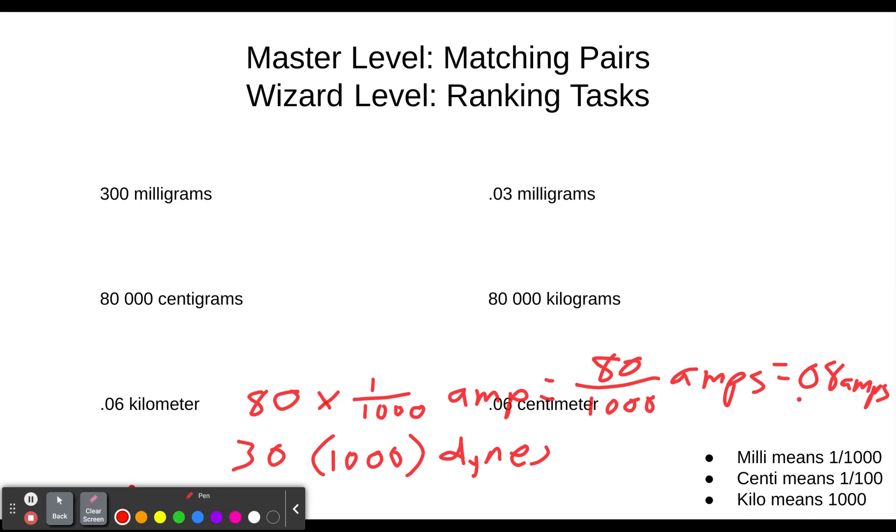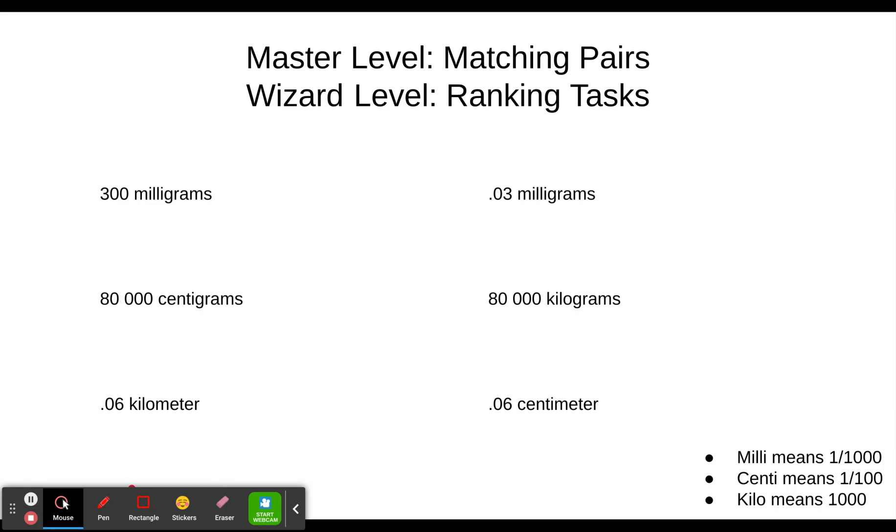Onto the next level. So this one, we're doing the same thing. In this case, in the master level, you're matching them up. They'll have two answers using different prefixes or no prefix. And you will just match up the ones that are the same. And in the wizard level, you do the same thing, except for the same process we're going to do here. But then in the end, you're ranking them as to which one's the biggest and which one's the smallest and which one's the middlest is the term they use for the one in the middle.